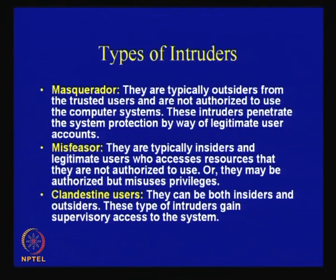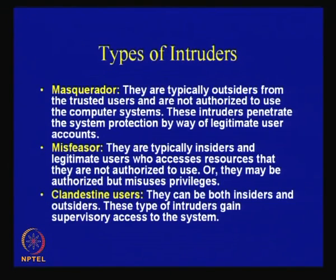Misfeasors are typical insiders and legitimate users who have access to resources, but are essentially accessing resources which they are not authorized to use — they violate or misuse the privileges provided to them. The third kind of intruders are known as clandestine users. They can be both insiders and outsiders, and these intruders typically gain supervisory access to the system. These are the three broad categories of intruders.